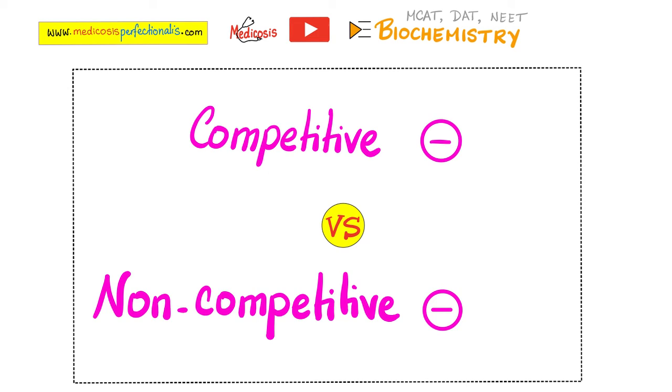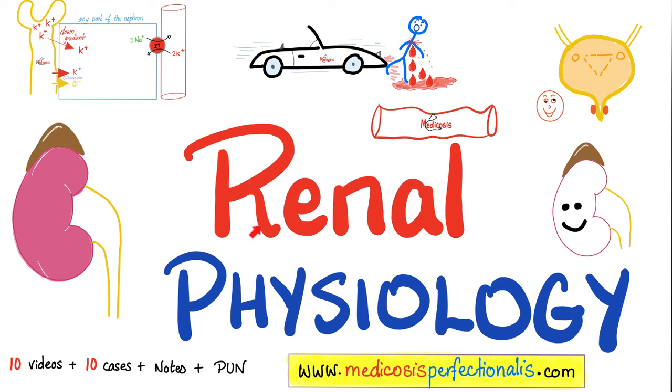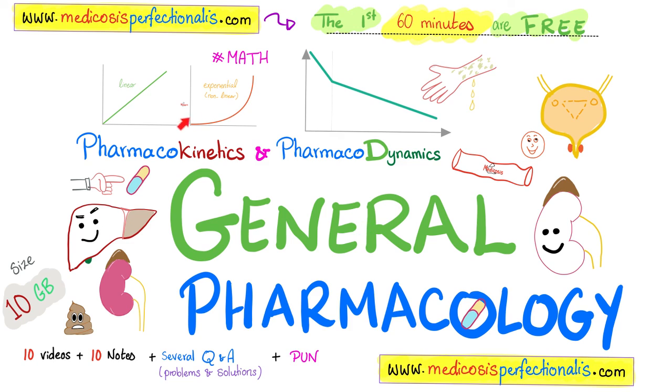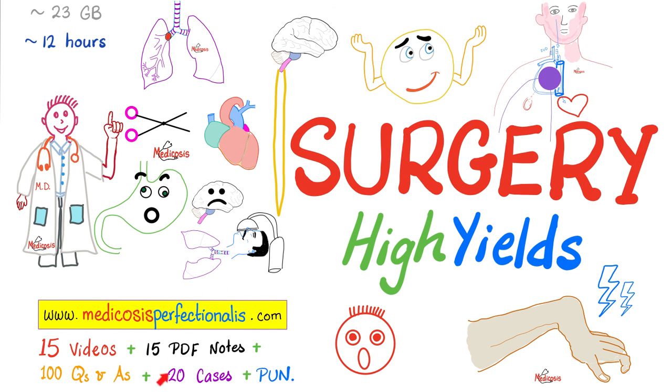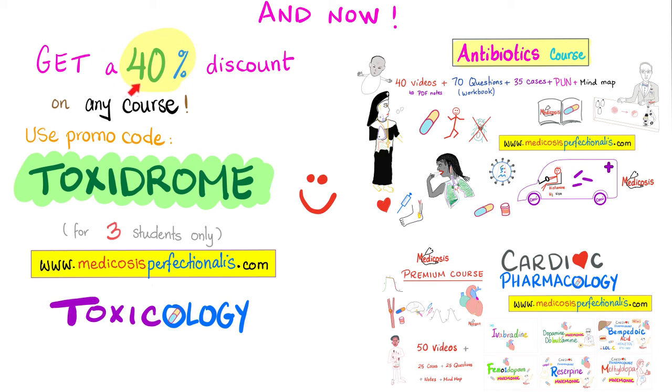In the next video, we'll talk about competitive inhibition versus noncompetitive inhibition. You don't want to miss that. So subscribe, hit the bell, and save this playlist. If you like this video, you will adore my kidney physiology course at medicosisperfectionatist.com, my general pharmacology course, which has even more graphs, such as zero-order kinetics versus first-order kinetics, as well as my antibiotics course, and my surgery high-yields course. And for three students only, you can get a 40% discount towards any course on my website if you use the discount code toxidrome.